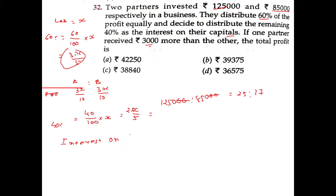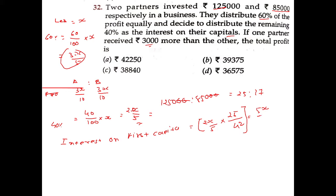Interest on the first partner's capital: 2x divided by 5 (which is 40% of profit) multiplied by 25 divided by 42, which gives 5x divided by 21.